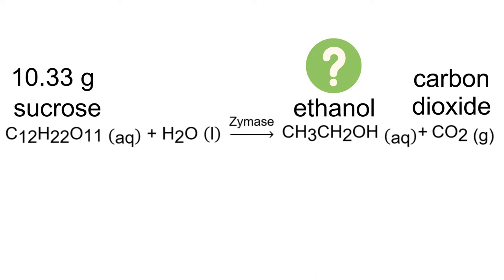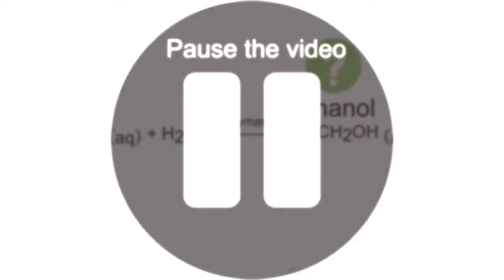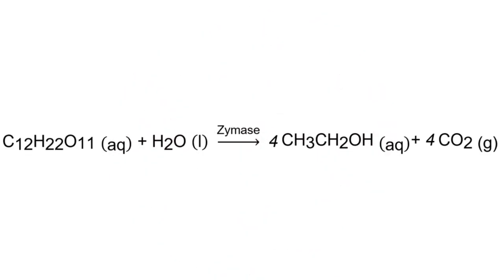My other question for you is: what do you think our first step is? If you said balance the chemical equation, you are correct. Before we can do any stoichiometry problem, we must first balance the equation. Please do that now. For your balanced equation, you should have gotten one mole of sucrose, one mole of water, four moles of ethanol, and four moles of carbon dioxide.